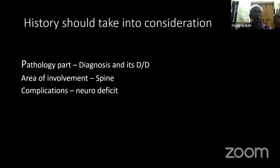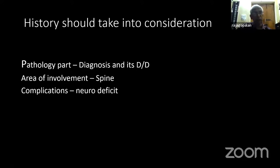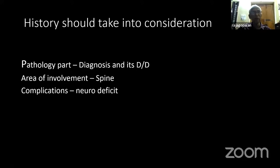When you take history, one simple way — this can apply not only for spine. For example, tuberculosis of hip joint with fibrous ankylosis: the first part of history is about the pathology of tuberculosis, the second part about the hip, the third part about the complication. In the spine it is much more elaborate. The history should cover what is the area of the spine involved — cervical, lumbar, or dorsal — and the complications including neurology. So three things you have to cover in the history.